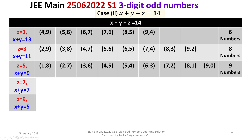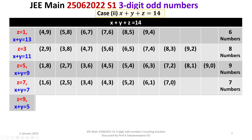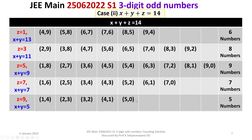For z equal to 7, x plus y equals 7, giving: 1,6; 2,5; 3,4; 4,3; 5,2; 6,1; 7,0 — that is 7 numbers. For z equal to 9, x plus y equals 5, giving: 1,4; 2,3; 3,2; 4,1; 5,0 — that is 5 numbers. So the subtotal for Case 2 is 6 plus 8 plus 9 plus 7 plus 5, which is 35. The number of 3-digit odd numbers whose sum of digits is 14 is 35.